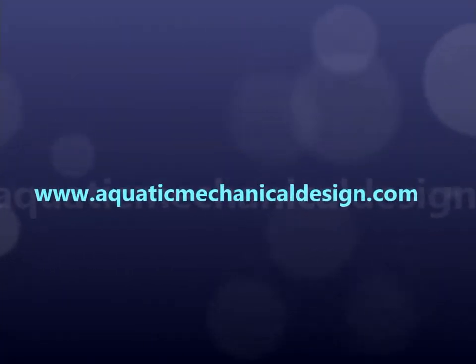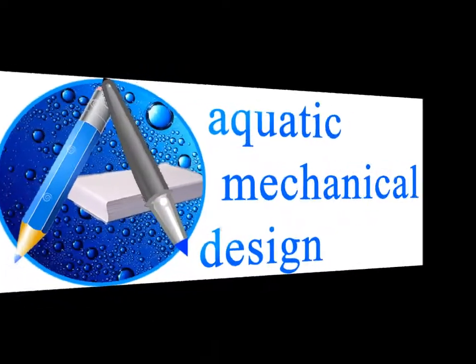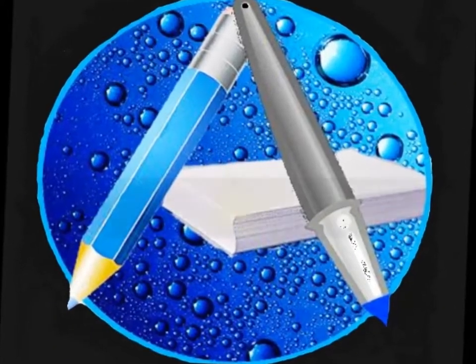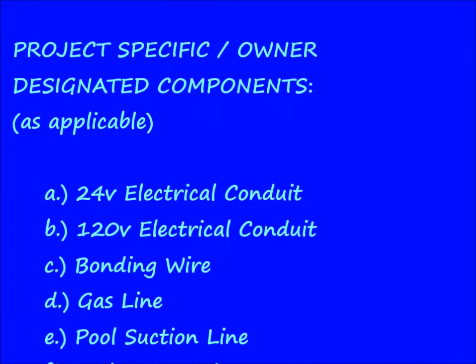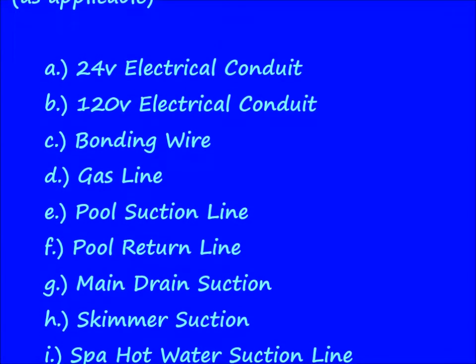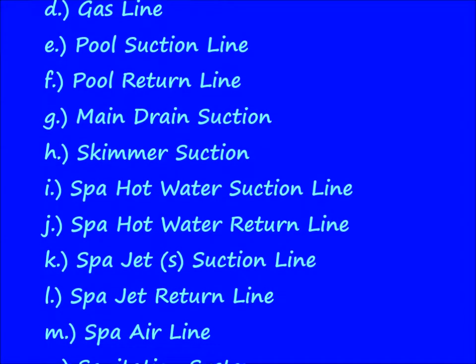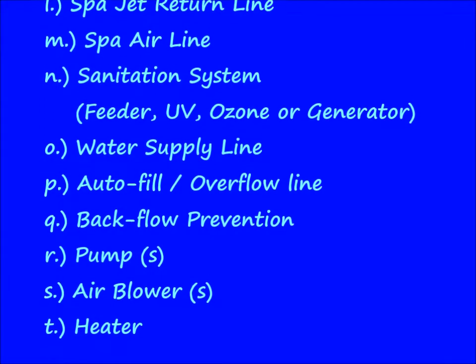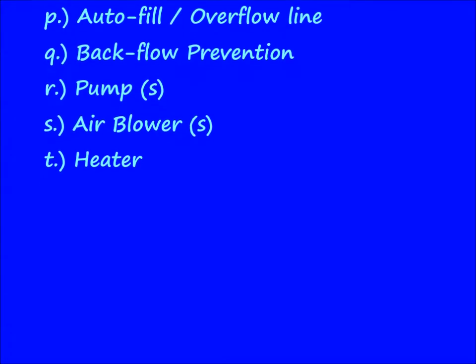This aquatic mechanical design presentation covers what's shown on sheet P2, which includes project-specific, owner-designated elements for plumbing, electrical, and lighting. Sheet P2 will exhibit 24-inch electrical conduit, 120-volt electrical conduit, bonding wire, gas line, pool suction, pool return, main drain suction, skimmer suction, spa hot water suction and return, spa jet suction and return, spa airline, sanitation, potable water supply, autofill overflow line, backflow prevention, pumping, air blower, and heater.